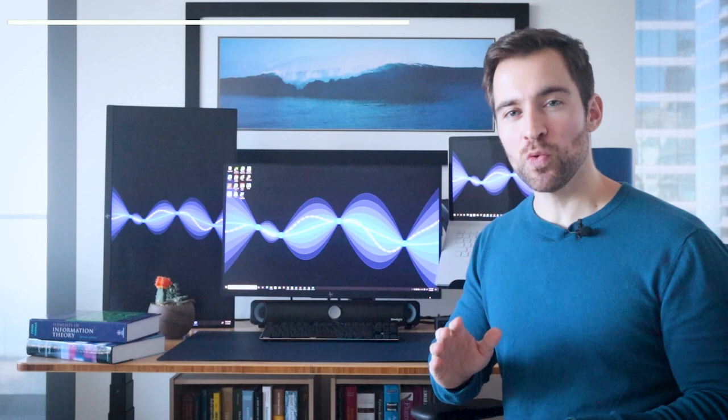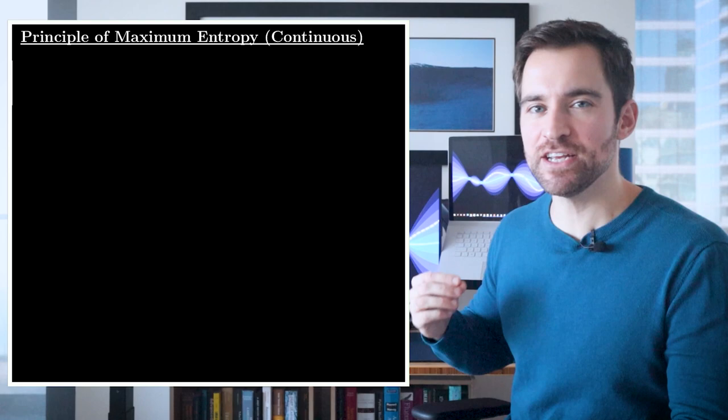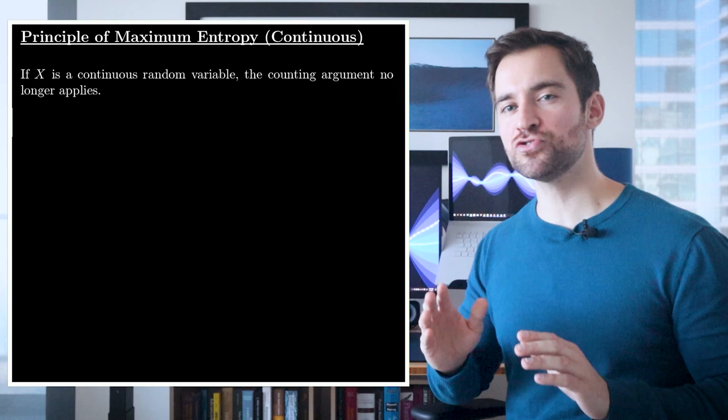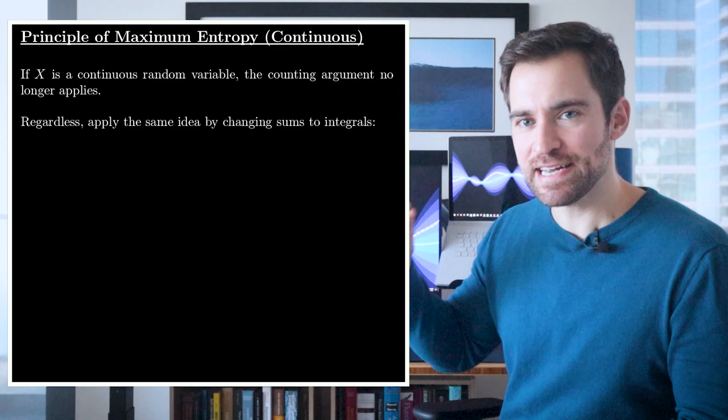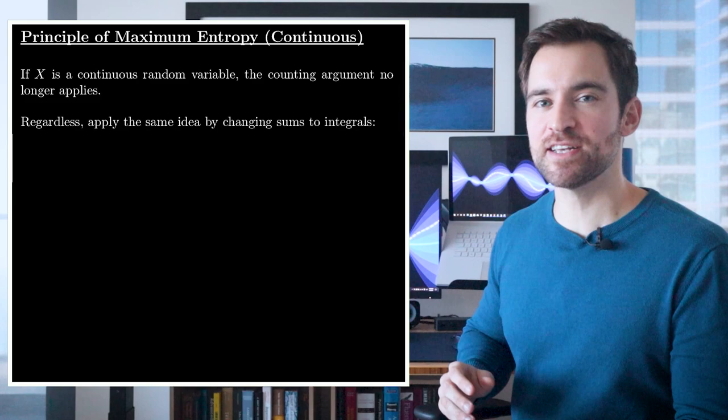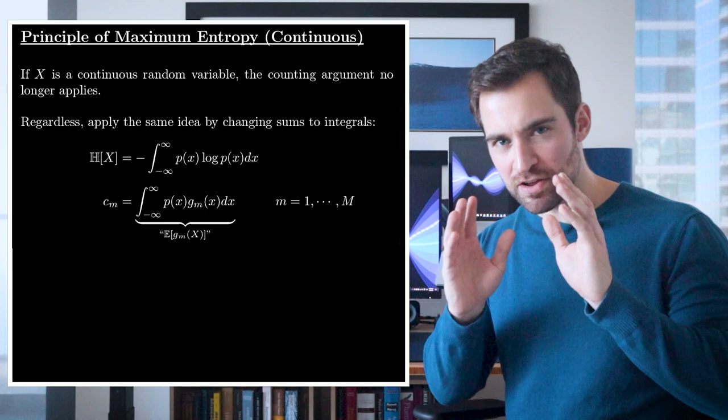You should have a sense of the maximum entropy principle. Though, we haven't arrived at any famous distributions. To do that, we need to consider the continuous case. The first thing to recognize is that the counting argument I used earlier no longer applies. You can't justify the uniform as the most typical stream of all possible streams, particularly because a continuous domain can be infinitely divided. But nonetheless, let's blindly charge forward and apply the exact same idea by changing sums to integrals.